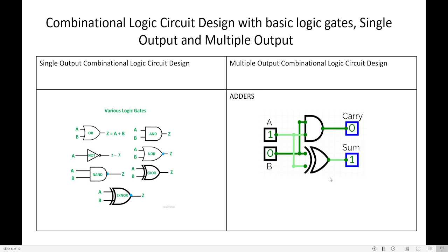Here is one more example: the half adder circuit. It has two inputs A and B, and two outputs — sum and carry. The output depends upon the input, so such circuits are called combinational logic circuits. There are two types of circuits: single output circuits and multiple output circuits.